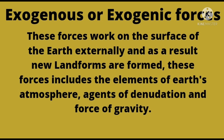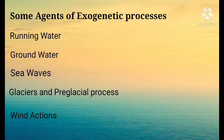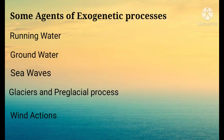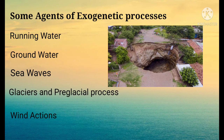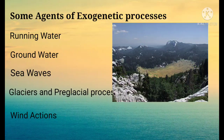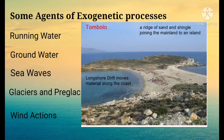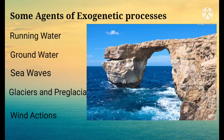The different types of agents of exogenetic processes include running water, which erodes and develops different landforms giving different shapes. The next agent is groundwater — due to the soluble action of groundwater, landforms like sinkholes, swallow holes, and uvalas are developed. Sea waves along the coast also develop landforms like tombolos and arches.